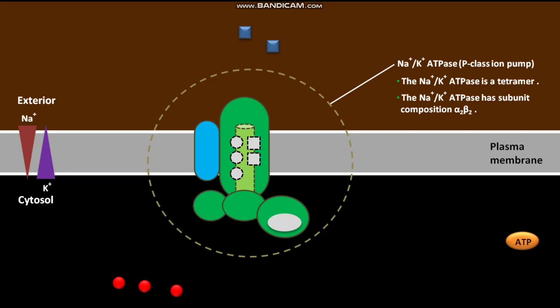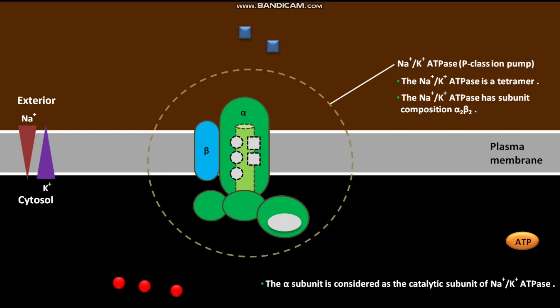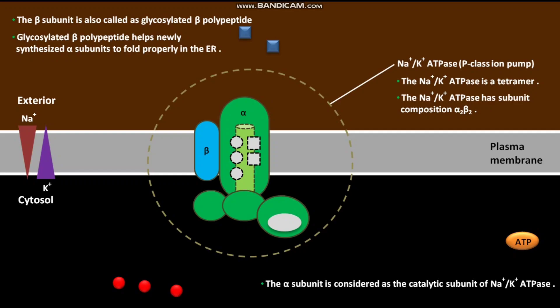In this video, only one alpha subunit and one beta subunit of Na+/K+ ATPase are shown. The alpha subunit is considered the catalytic subunit. The beta subunit is also called the glycosylated beta polypeptide. It helps newly synthesized alpha subunits to fold properly in the ER, and is apparently not directly involved in ion pumping.